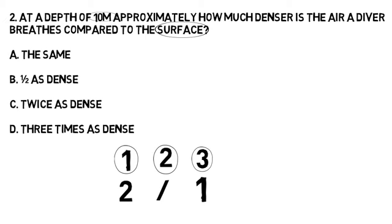We then look at our answers: answer A, the same; answer B, half as dense; C, twice as dense; D, three times as dense. So we're comfortable it is going to be answer C, twice as dense.